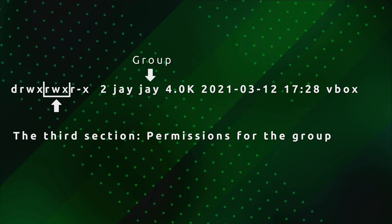Moving on, we have the third group — another group of three characters, again r, w, and x. These permissions pertain to the group. In this case, the group is also me. When you create a user, you get a group — not always, but many distributions do that. By default, the files and folders you create inside your home directory will be owned by you and your group.